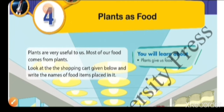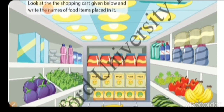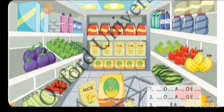Hello students, welcome back. Subject: Science, Chapter 4 - Plants as Food. In the previous chapter we learned that all living things need food. Food comes from plants. Plants are very useful to us — plants give us vegetables, fruits, cereals and pulses.